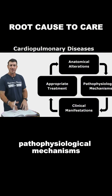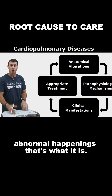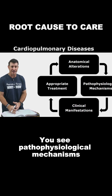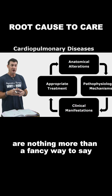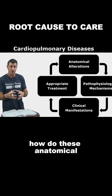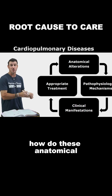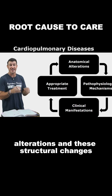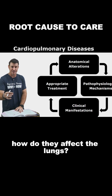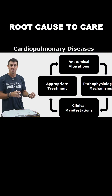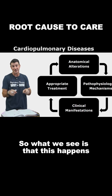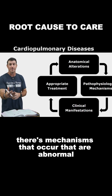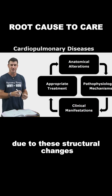Just break that word down — pathophysiological mechanisms, abnormal happenings. That's what it is. Pathophysiological mechanisms are nothing more than a fancy way to say how do these anatomical alterations and structural changes affect the lungs? What's happening? There are mechanisms that occur that are abnormal due to these structural changes.